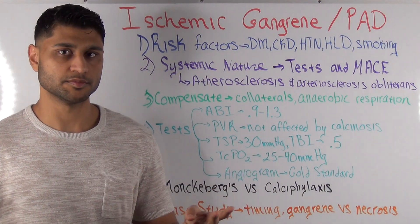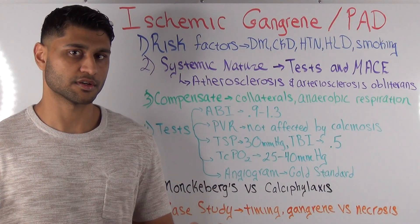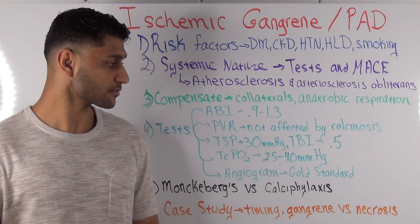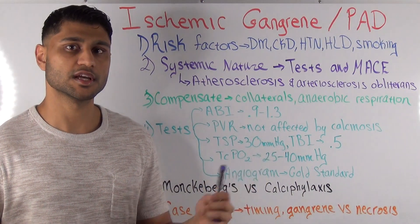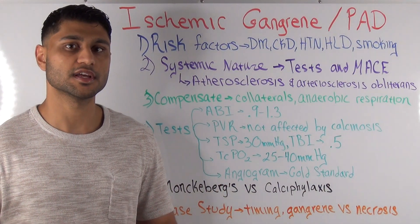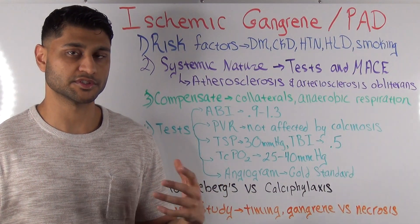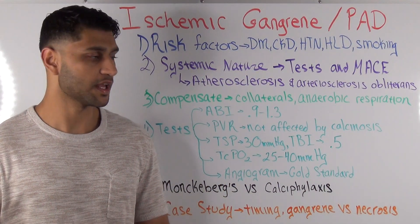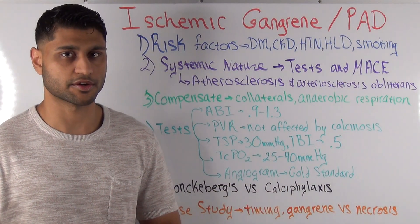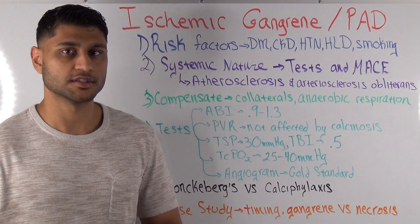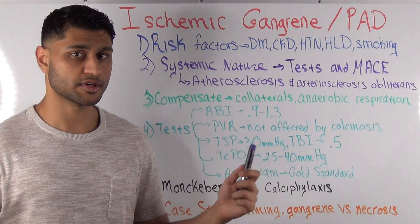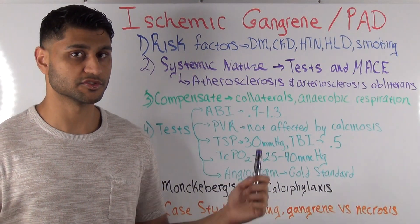The second test you need to be familiar with is a PVR, your pulse volume recording. This is a great test because it tells you how much volume is going for every single pulse or heartbeat. It's also good because it is not affected by calcified arteries — whereas the ABI was affected by calcified arteries, the PVR is not.